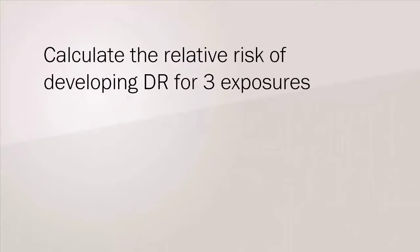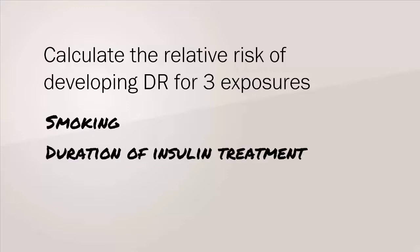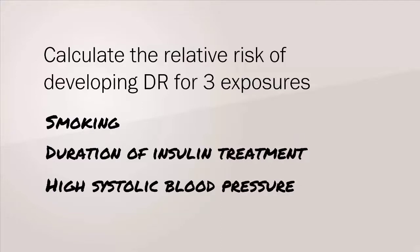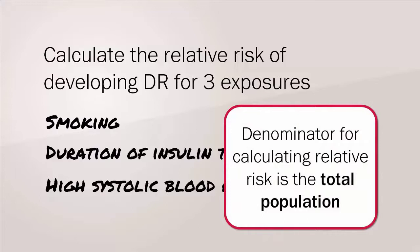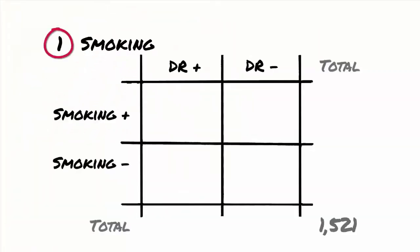We're going to calculate the relative risk of developing diabetic retinopathy, or DR, for three different exposures: smoking, duration of insulin treatment, and high systolic blood pressure. Note, just to remind you that the denominators for calculating the relative risk are different from those of the odds ratio — the denominator is the total population. We'll use a cohort study of 1,521 individuals. 72 participants developed DR over the study period and 1,449 did not.